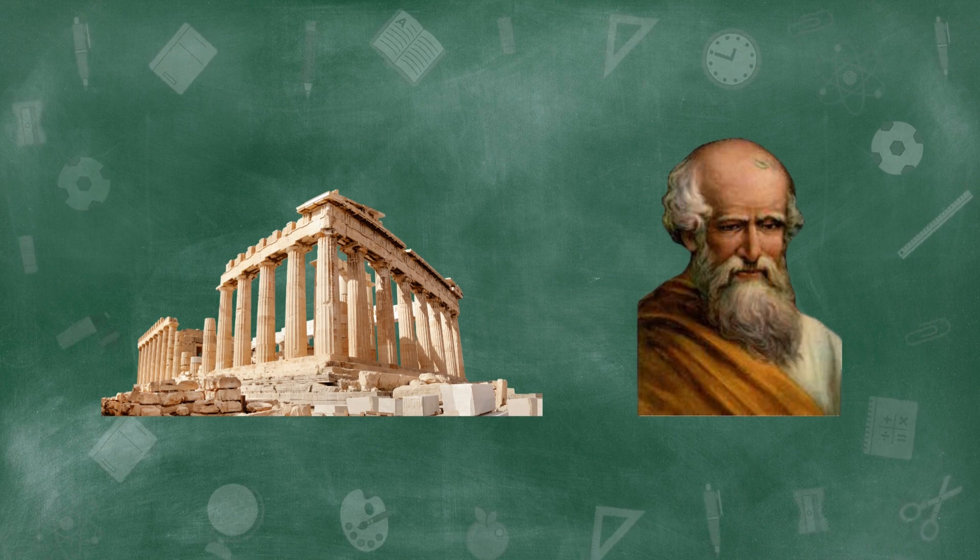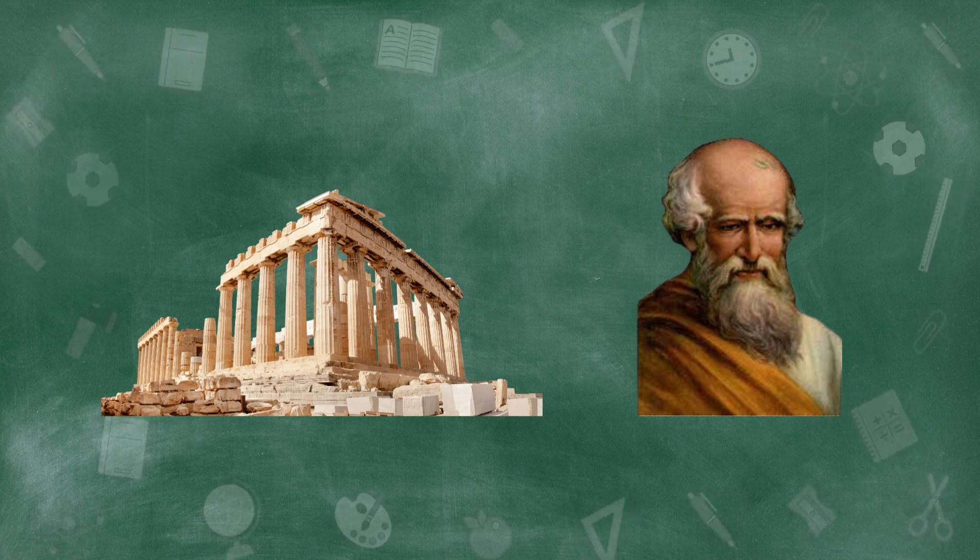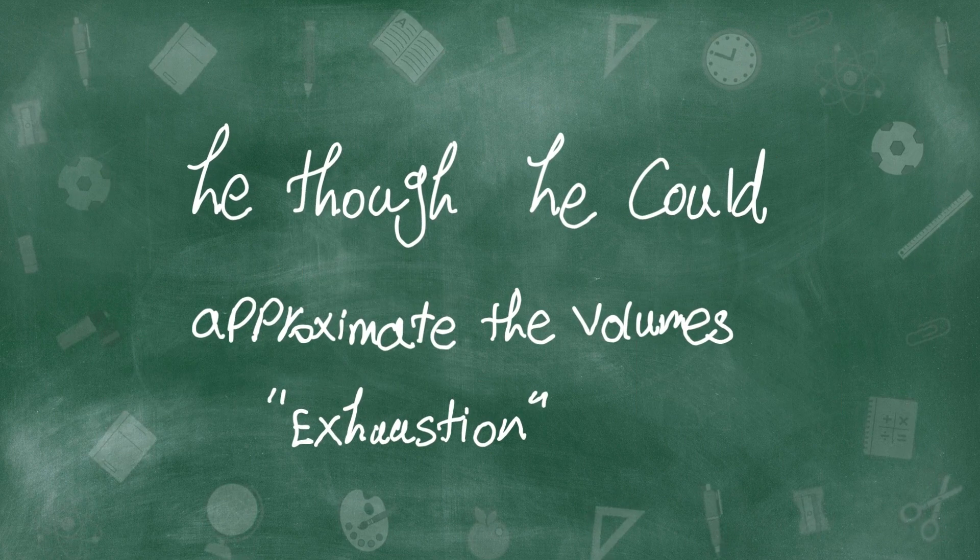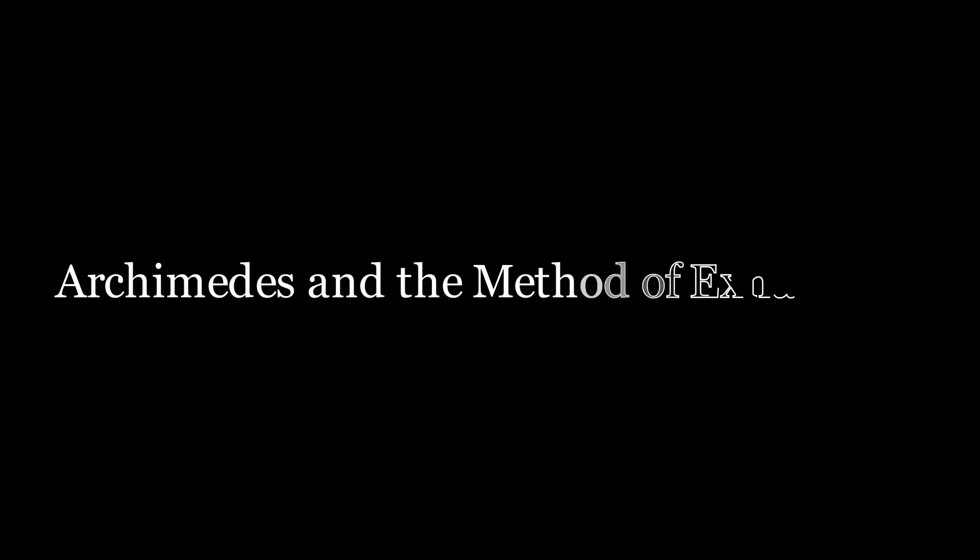Back in time, where there was no epsilon and delta on the blackboards, back in Greece, there was a man named Archimedes. Archimedes was trying to find the volume and area of different shapes. To do that, he thought that he could approximate the volumes with the method of exhaustion. Let me explain what Archimedes did with an example.